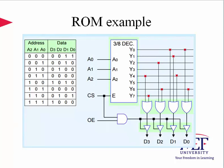Let's start with the ROM example implementation. This figure shows an 8x4 ROM implementation using a decoder and a bunch of multiple-input OR gates. There are three-state buffers used to open-circuit the output when the chip select or output enable input is disabled. The connections shown determine the binary data stored in the ROM. If you want to store different binary data, you will need to remanufacture the ROM because wire connections are already made and have to be disconnected in order to allow rewiring all these connections to get different data stored in the ROM.